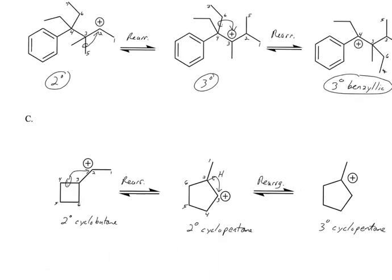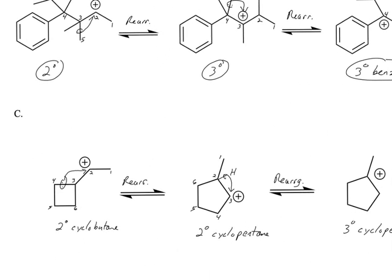Continuing on. Now you can see these rearrangements will happen because of ring strain. Six-member rings is kind of the sweet spot for carbon. Four and three-member rings certainly are bad. There's a lot of ring strain there. For an sp3 hybridized atom, it wants to have a 109.5 degree bond angle.